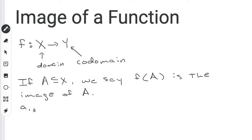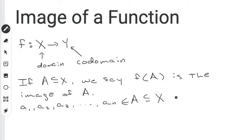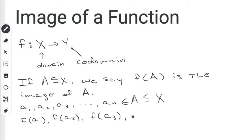So let's say a1, a2, a3, all the way to an are elements of a. Because they're all elements of a, they're also all elements of x, since a is just a subset of x. So if all of these elements belong to the domain, then we can put them in the function to get the images. That means the images are going to be f of a1, f of a2, f of a3, all the way to f of an.